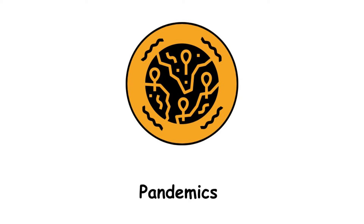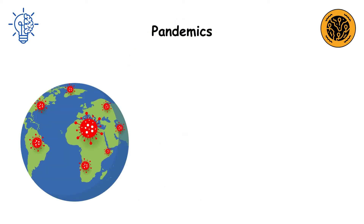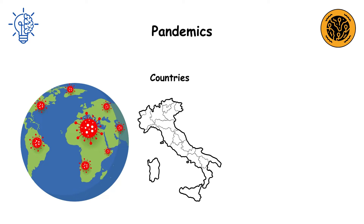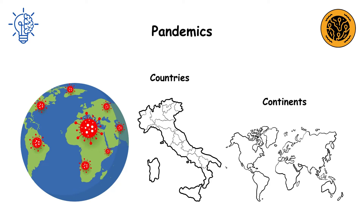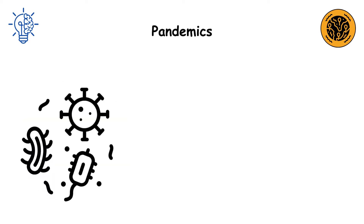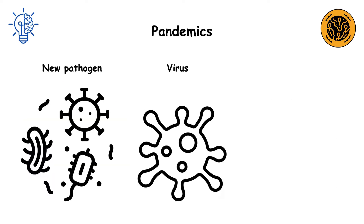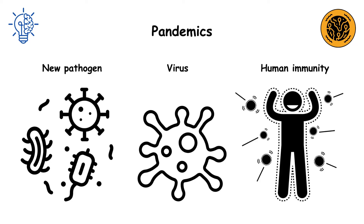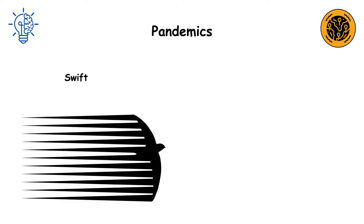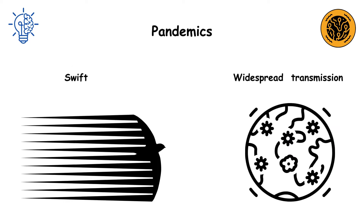Pandemics are large-scale outbreaks of infectious diseases that spread rapidly across countries or continents. They usually occur when a new pathogen, like a virus, emerges with little to no human immunity, enabling swift and widespread transmission.